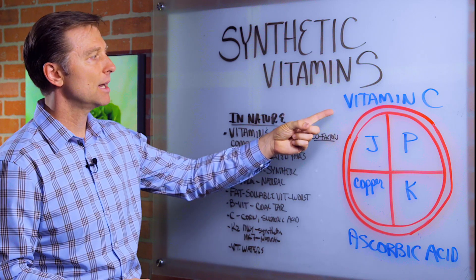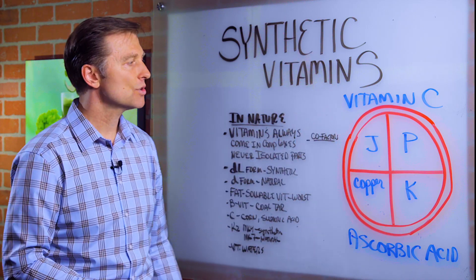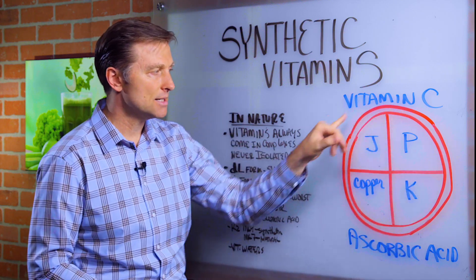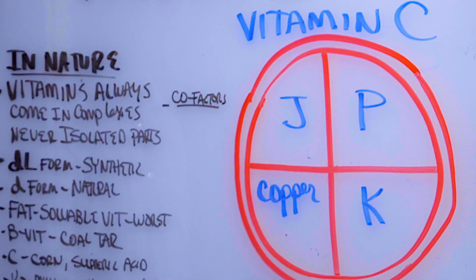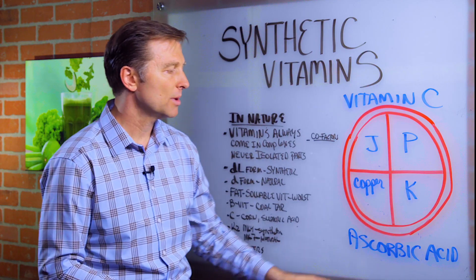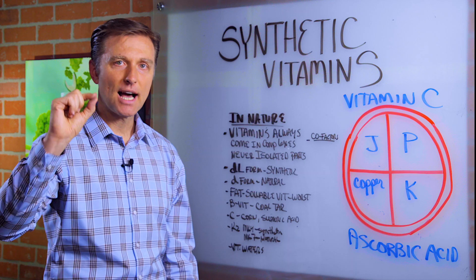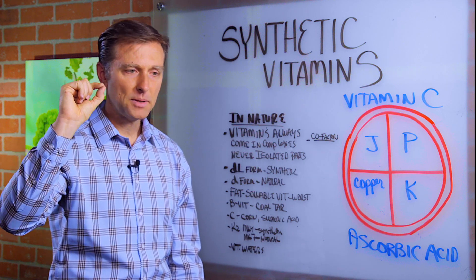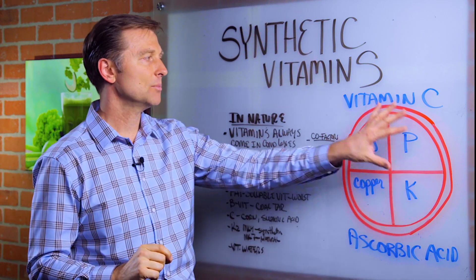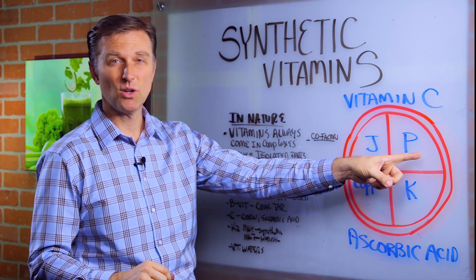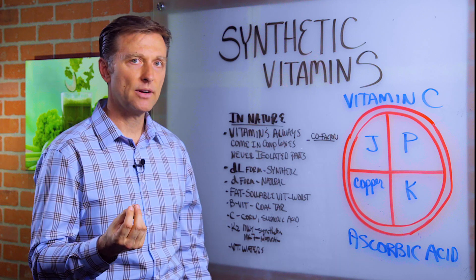Let's just take vitamin C complex. Vitamin C in nature comes with different parts. It has the ascorbic acid protective shell, small amount. By the way, most people when they get ascorbic acid, they think they're getting vitamin C. That's only the antioxidant protective piece of it. It's not the complete complex. In nature, you have the P factors. That's the bioflavonoids, the rutin that helps all the capillaries.